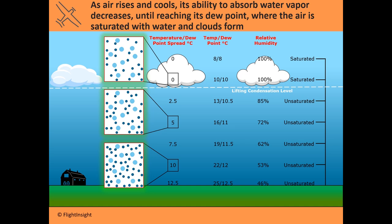Air cools as it rises, and the rate it cools depends on whether it's dry or moist air — that is, whether it's saturated or unsaturated. These are called the dry adiabatic rate and wet adiabatic rate. In this example, starting at 25°C temperature and 12.5°C dew point, as we rise to the next level the temperature drops to 22°C and the dew point drops to 12°C. There's a bigger drop in temperature than in dew point, so looking at the spread column, as we get higher and higher the spread gets lower and lower — the temperature is getting closer and closer to the dew point.